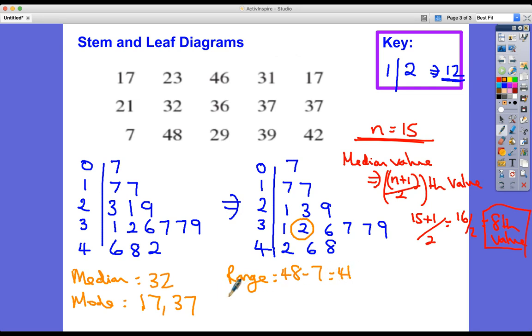Simple to find the range - the range is the largest value subtract smallest, so this one's 48 subtract 7, which is 41.